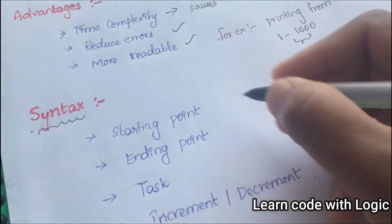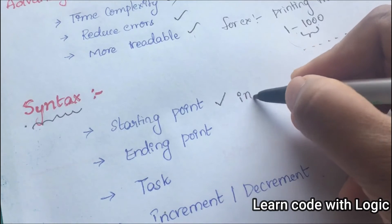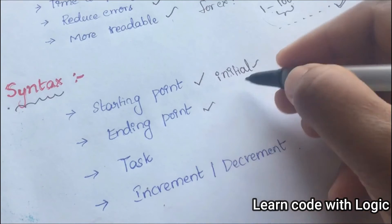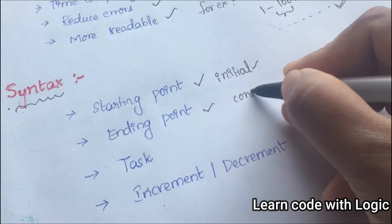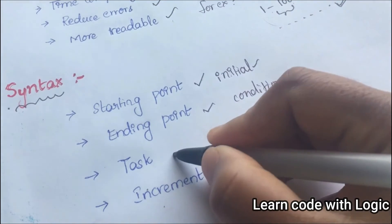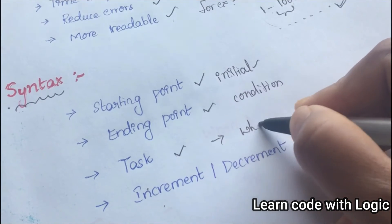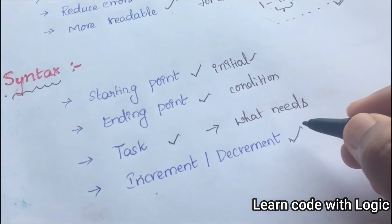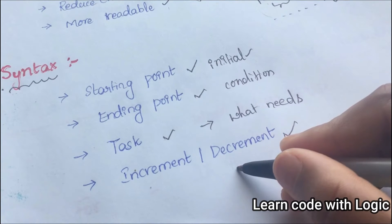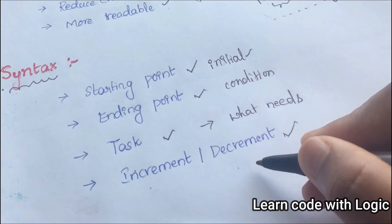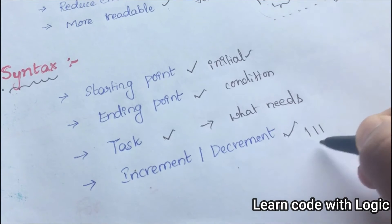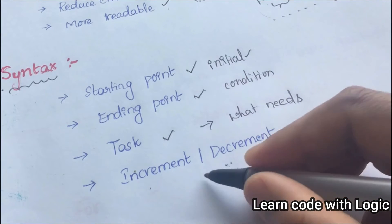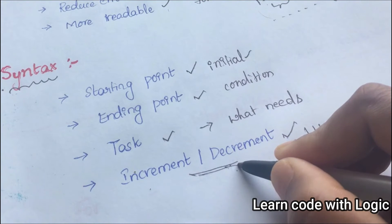Now let's understand the syntax for loops. We need a starting point — this we call initialization — and an ending point, which is the condition. We also need to define the task, meaning what needs to be executed, and an increment or decrement operator, which determines whether to move to the next number or go backward. We already discussed increment and decrement operators in detail when we covered operators.